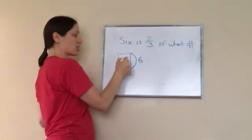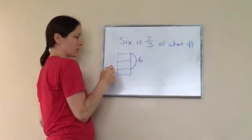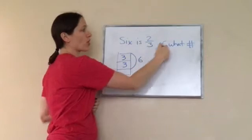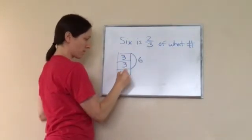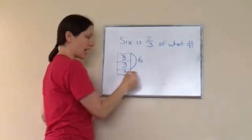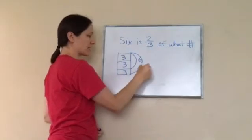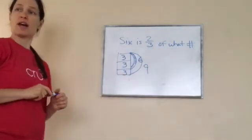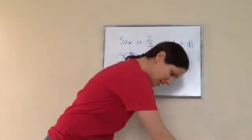So how much is in each of these? Three, three. So six is two-thirds of what total number? Three, six, nine. So this whole thing's nine, but two-thirds of it is six. Final answer is nine. That is lesson 117.